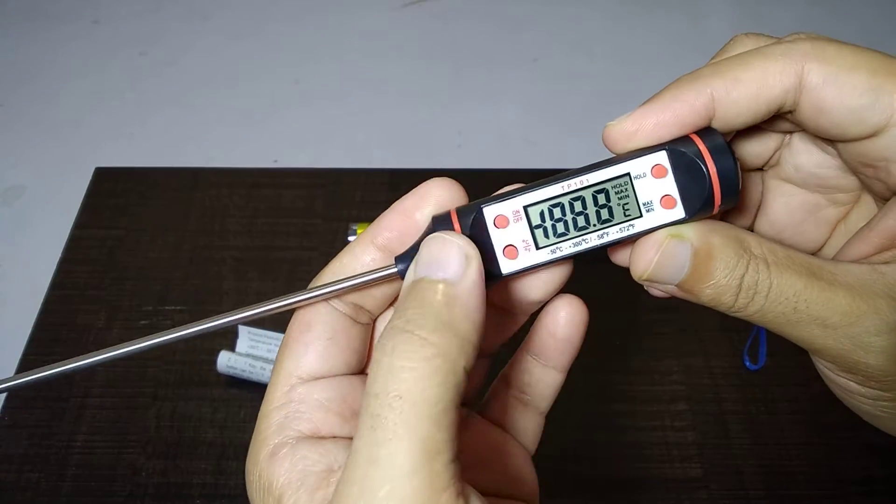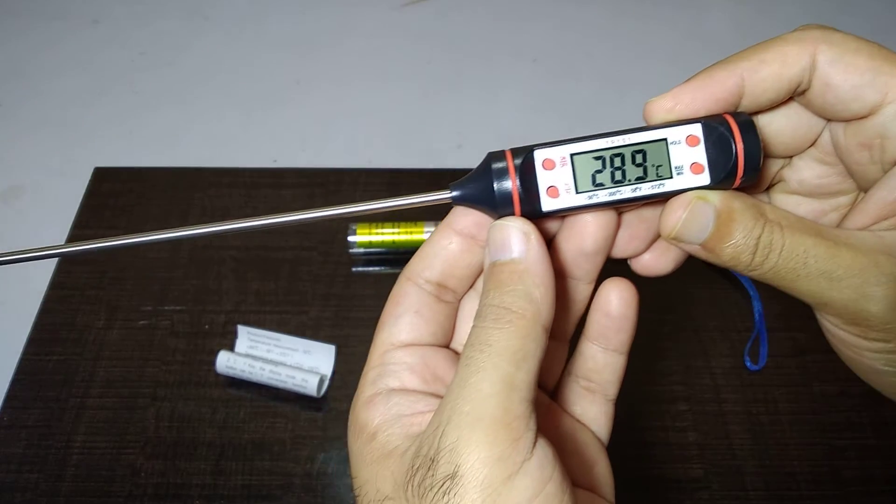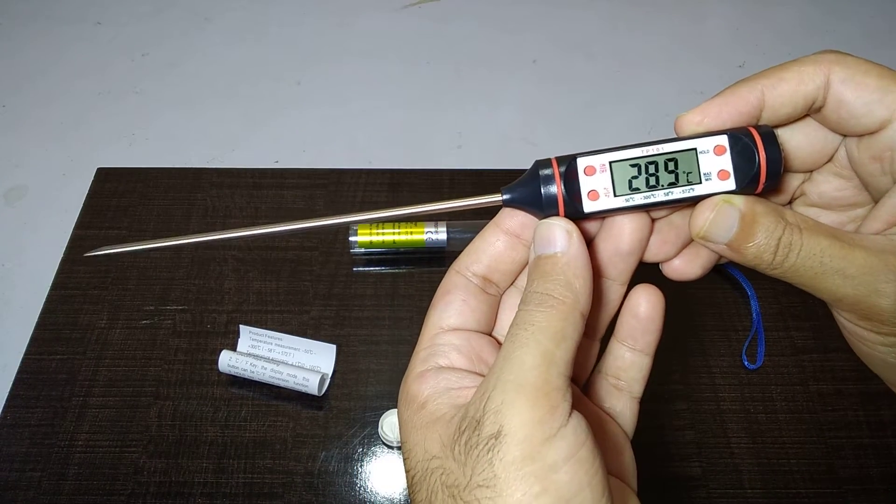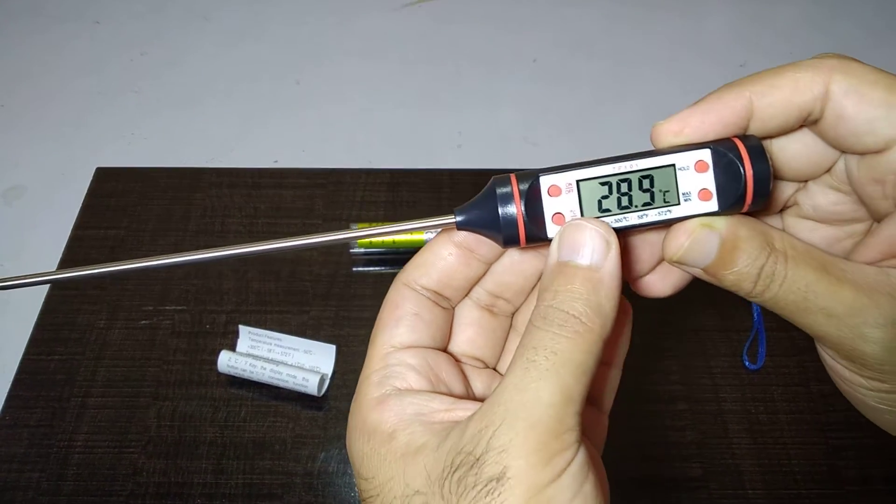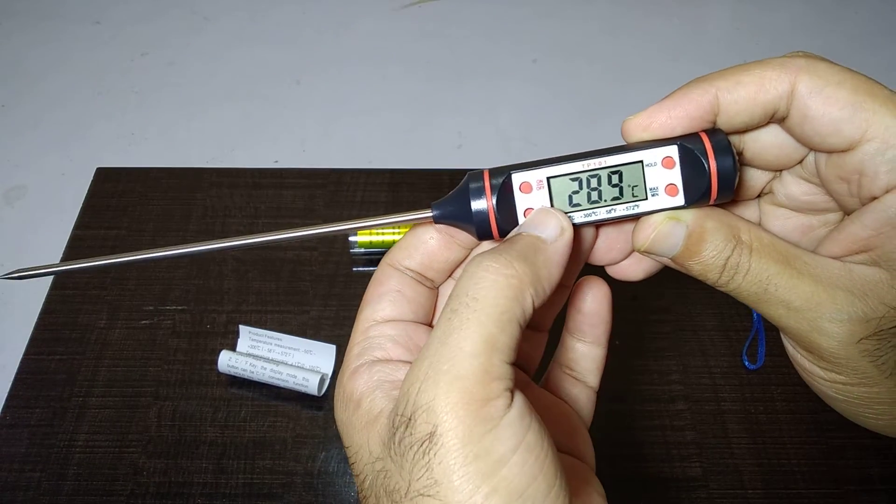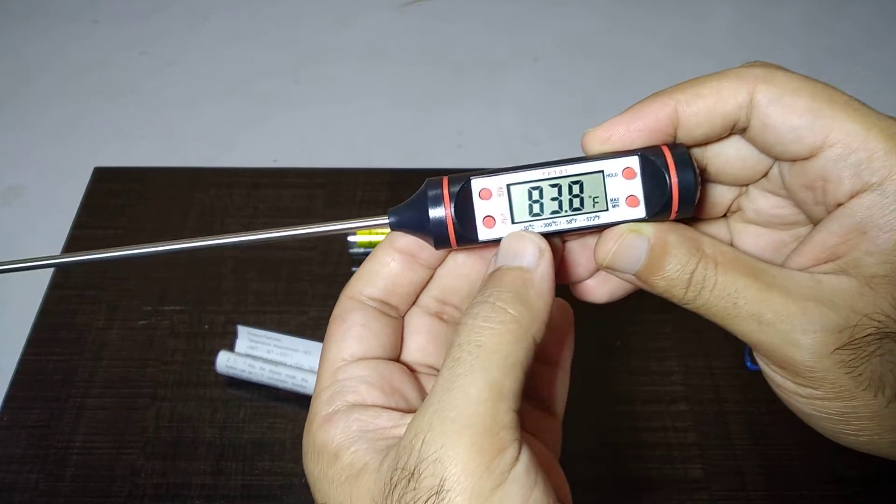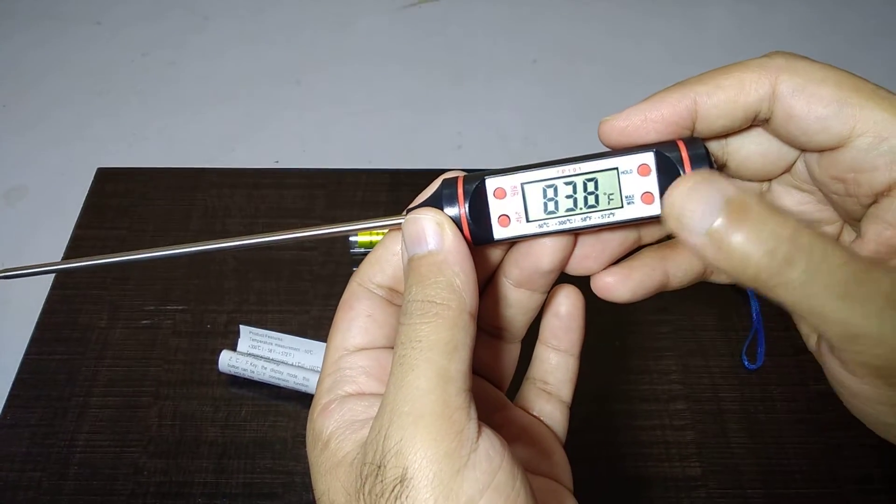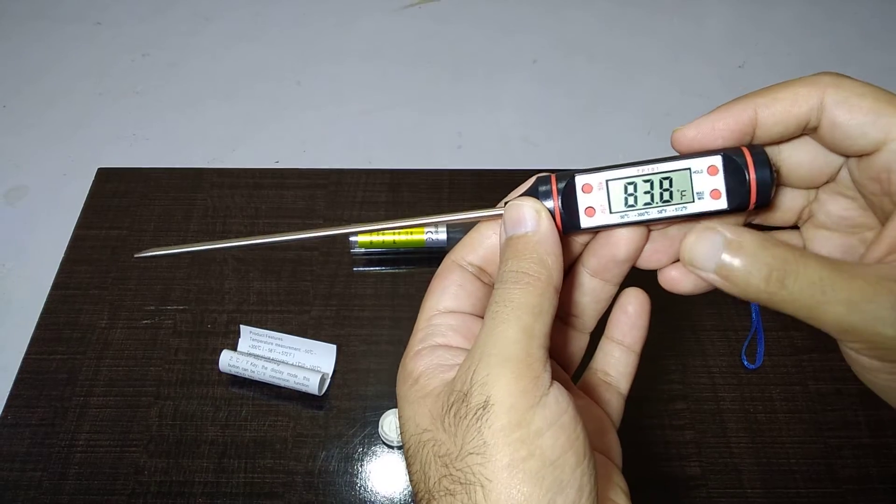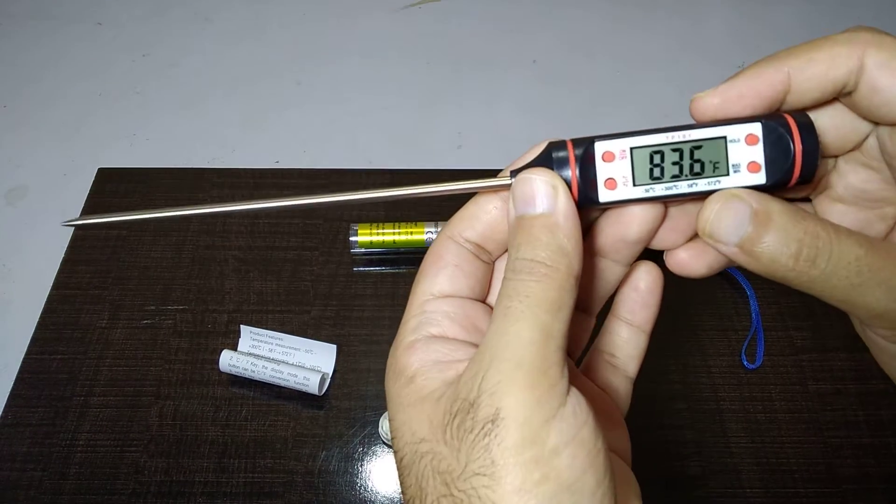Now it's showing 28.9 Celsius. If you want to see Fahrenheit, we press this button and it will turn to Fahrenheit. If you want to hold the temperature at any point while checking liquid or food...